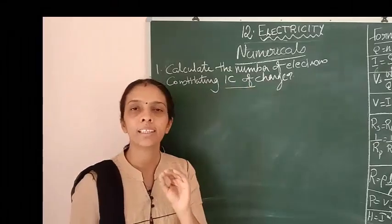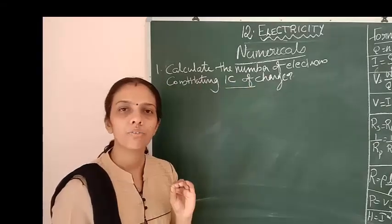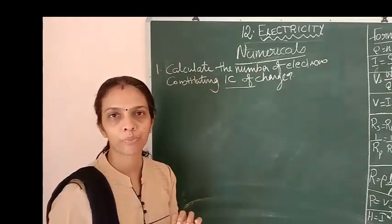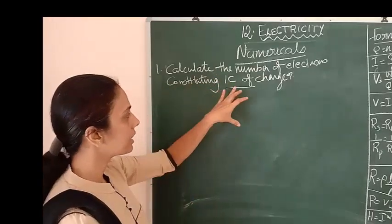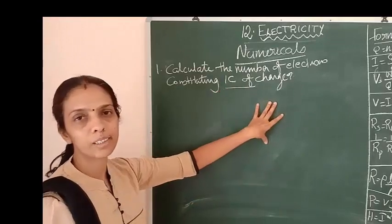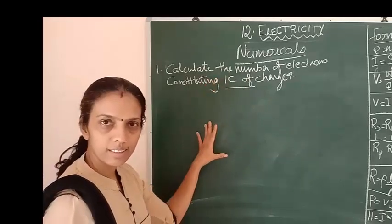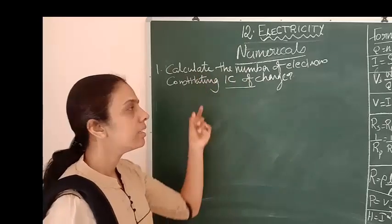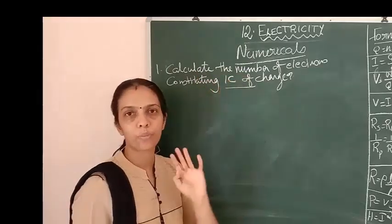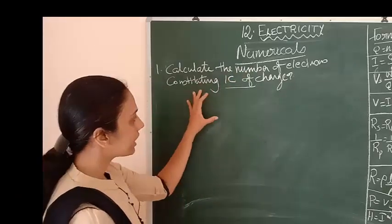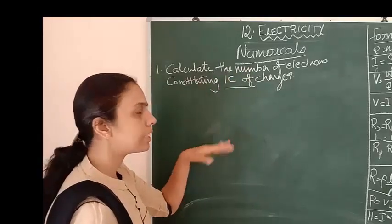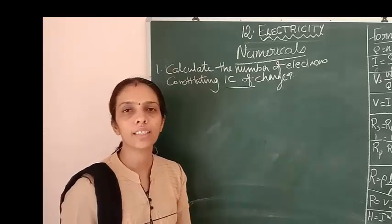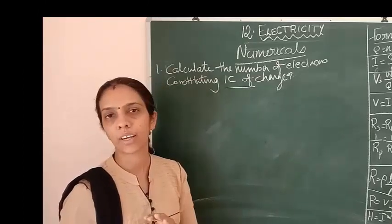While you are getting a numerical question, first you should read the question properly. Write down what data is given in the question. What we should find out, write that with a symbol and put a question mark. Then identify the relation between the given data and the unknown, substitute, and find out the answer.